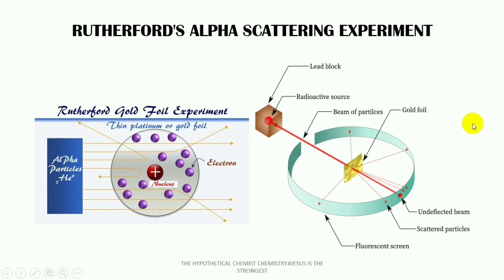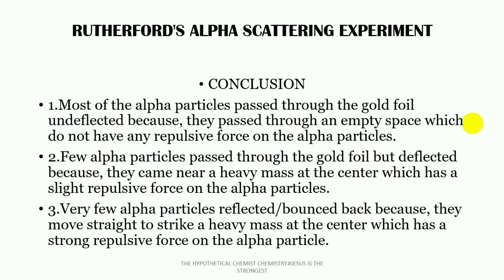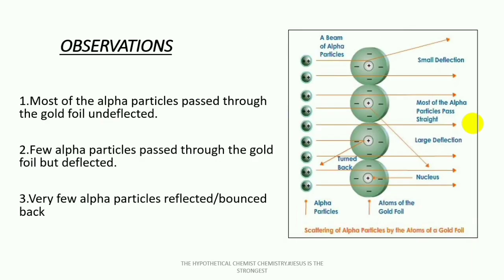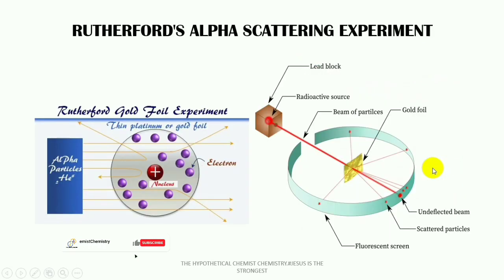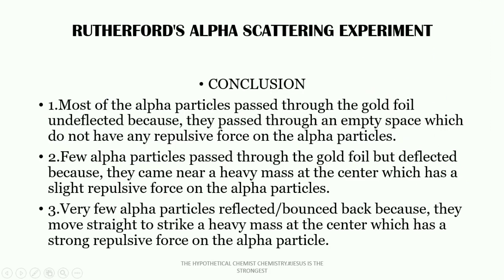After his observation, Rutherford concluded that most of the alpha particles passed through the gold foil undeflected because they passed through empty space which does not have any repulsive force on the alpha particles. In other words, the reason most alpha particles passed through without deflection is because they traveled through empty space within the atom.